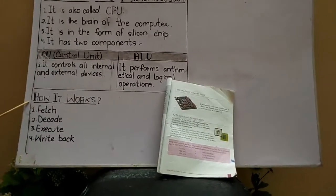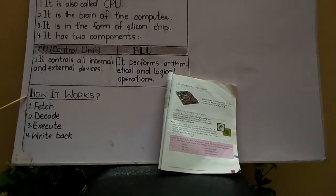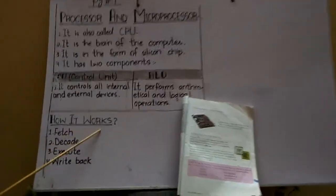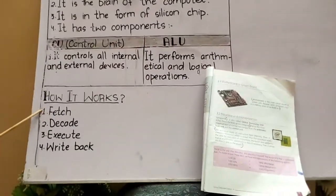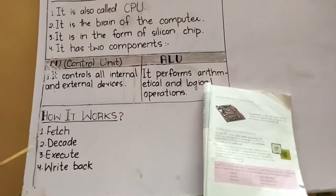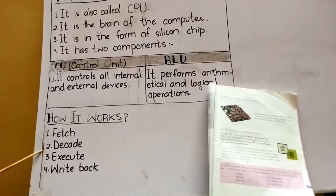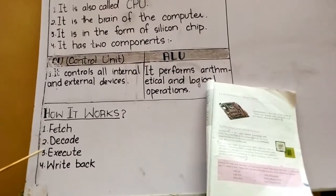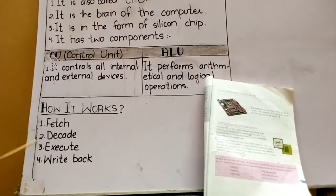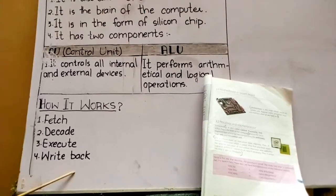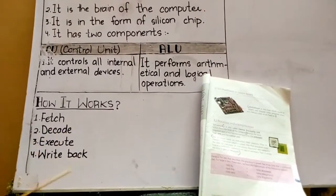Now, I'll explain what is the function of the processor. How it works? The processor performs its function by following these four steps. Number 1 step is Fetch. Number 2 is Decode. Then Execute. And step 4 is Write back. I'll explain these four points.